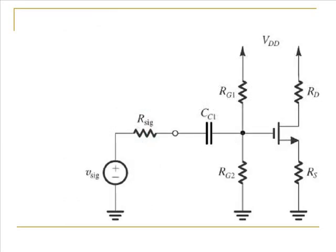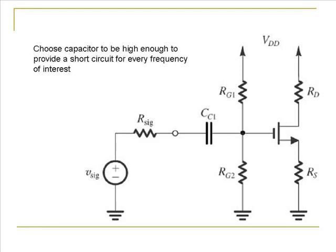To this circuit that has been biased we add an AC signal through a large capacitor. The capacitor value needs to be chosen such that it acts like a short circuit for every frequency that is contained in the input.